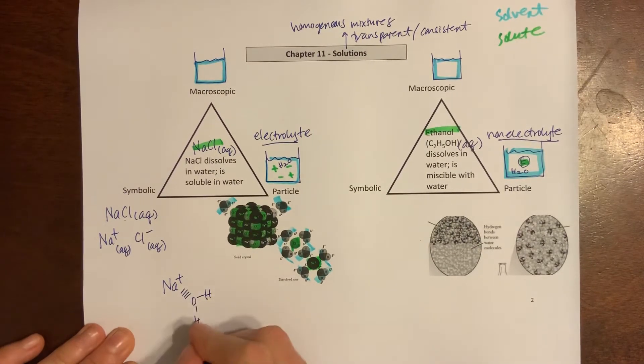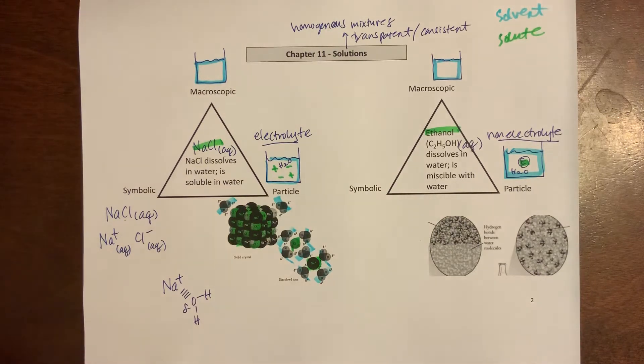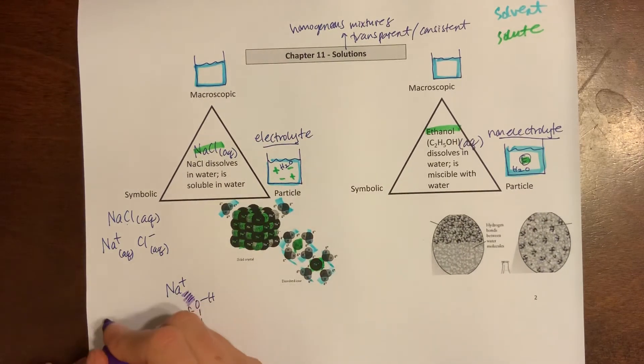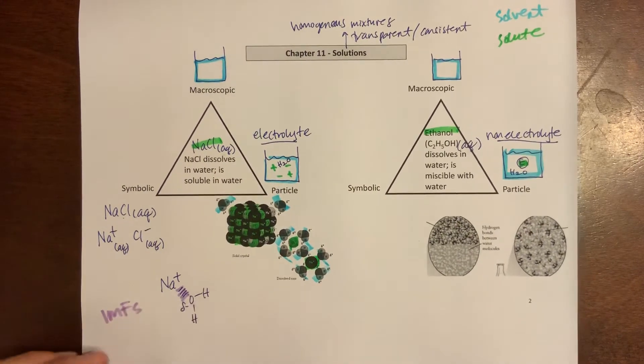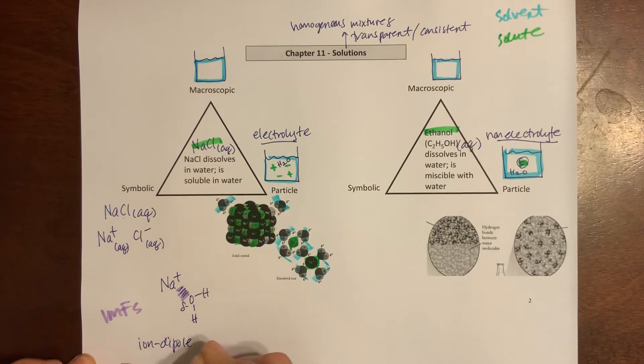If I could take this picture and write it as symbols, I could take my sodium ion and say that sodium ion is going to be attracted to the oxygen in water. Remember this oxygen would have a partial negative charge. What I'm looking at here is an intermolecular force from Chapter 10, IMFs. Specifically, can you recognize what this is when I have an ion? This was an ion-dipole attraction.